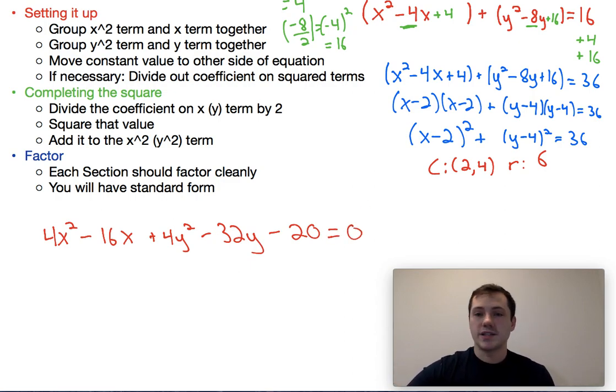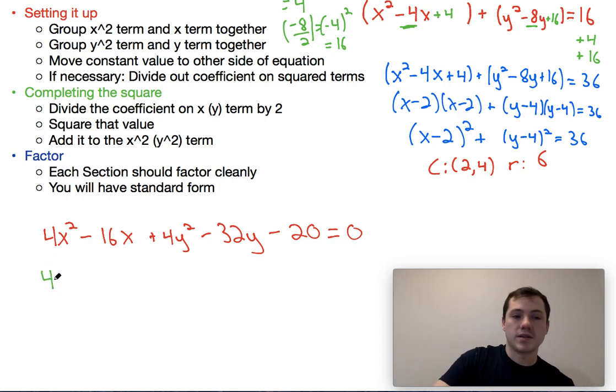All right, now what we're going to do is we're going to start the same way. We're going to go ahead and put our x squared terms and our x term next to each other, as well as our y squared term and our y term. So this would be 4x squared minus 16x, 4y squared minus 32y, set that equal to 20.